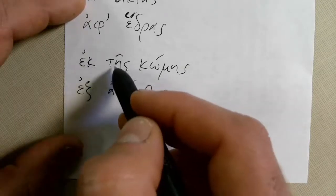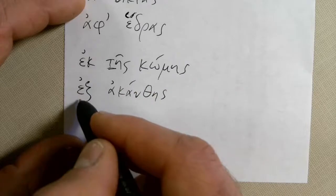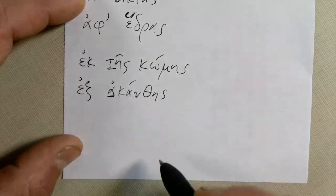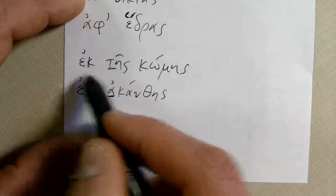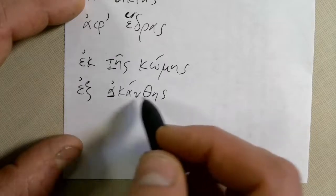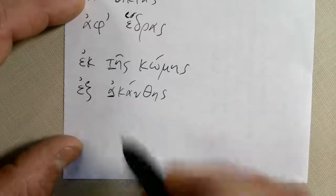ECH before a consonant. EX before a vowel. Ectis comis, out of the village. Ex acanthis, out of a thorn.